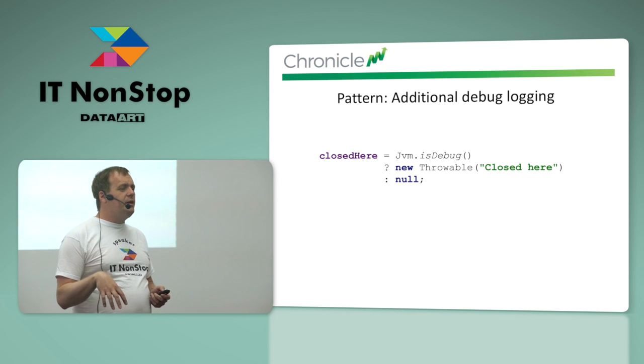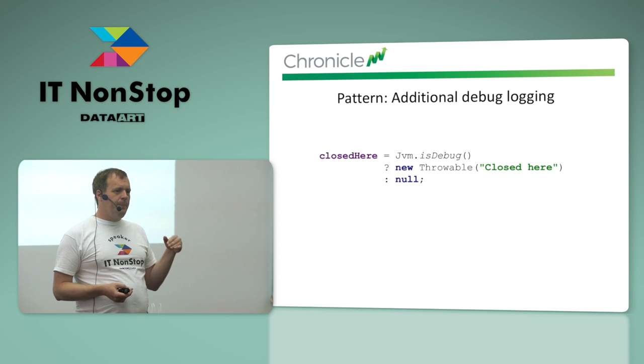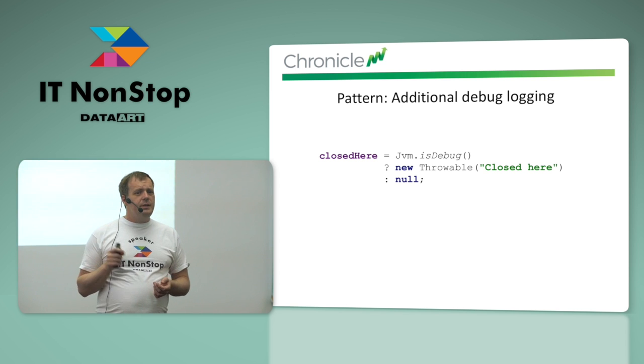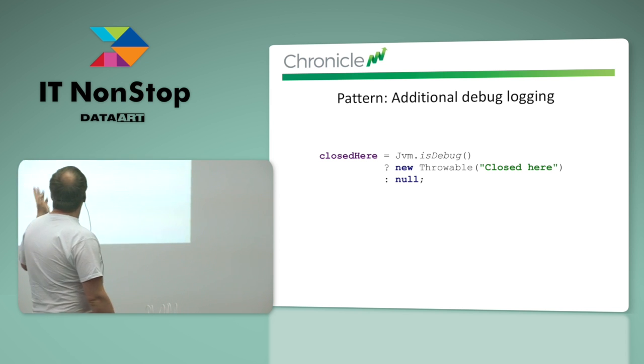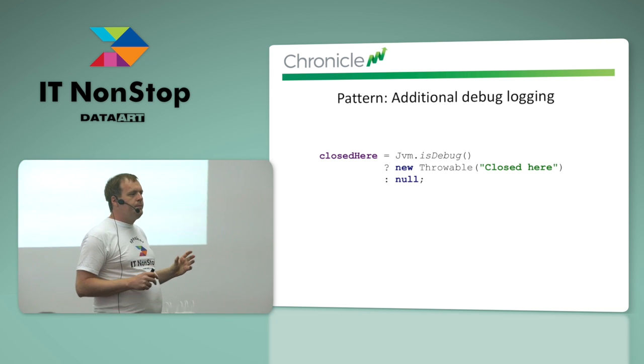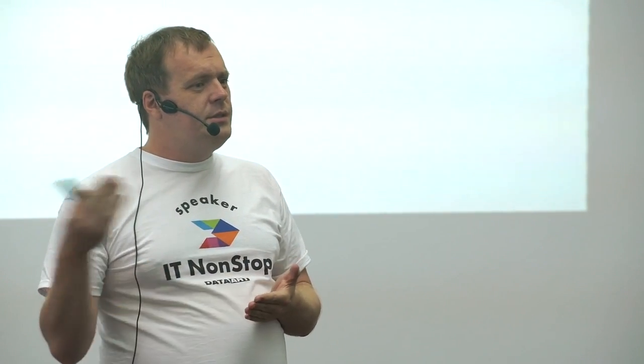A challenge in multi-threaded applications is using resources that get closed — one thread might close a resource while another still wants to use it, and tracing that down can be tricky. When debugging only, because it has some overhead, we take a stack trace indirectly by creating a new Throwable. If you attempt to use this resource in another thread after it's been closed, it will tell you where it was closed — giving you the stack trace of exactly where the resource was closed when you attempt to use it again.